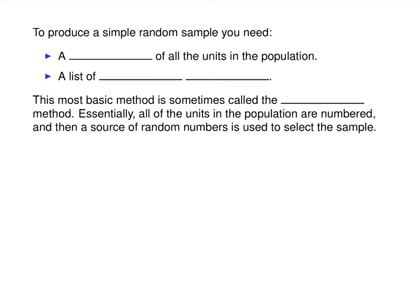To produce a simple random sample, the most basic method is called the lottery method. To do that you need a list of all the units in the population and a list of random numbers. All of your units in the population are numbered, and then you use random numbers to randomly pick numbers from that list.